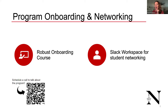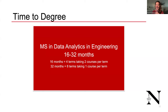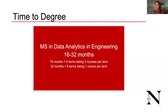Regarding time to degree: if you're doing two courses per semester, you can complete the program in as little as 16 months — for example, joining this May and graduating next August. If you want a slower pace, you can spread it out up to 32 months, which is eight semesters. Our semesters are 15 weeks, so even the summer session is a full semester — not shortened like some programs.